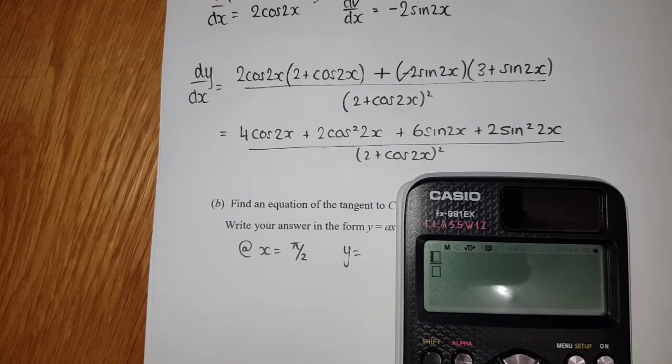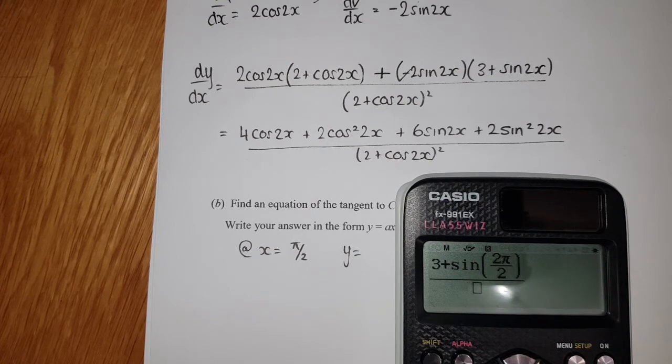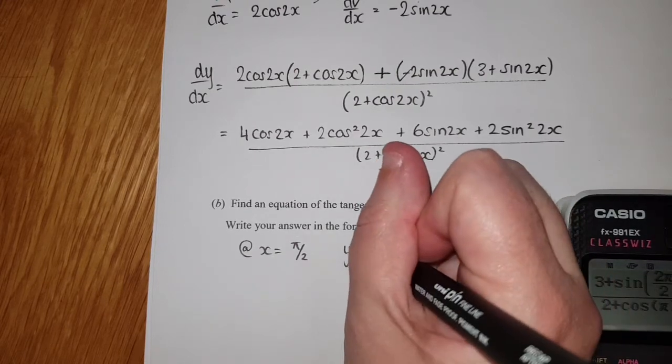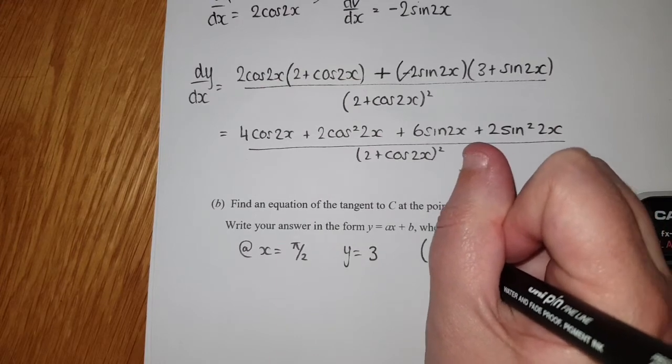So we've got (3 + sin(2x))/(2 + cos(2x)). That was a bit pointless, but we get the idea. You get y = 3, so there's my coordinate (π/2, 3).